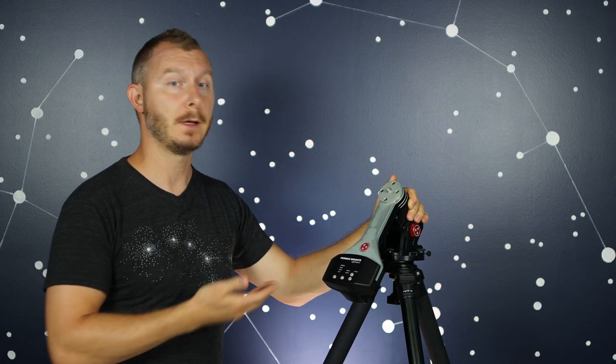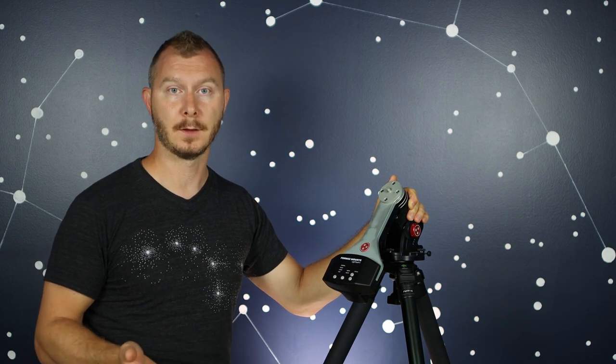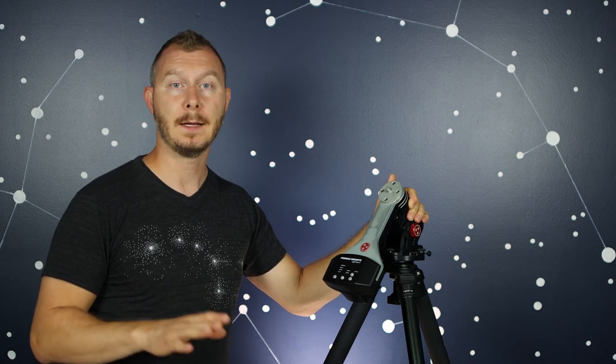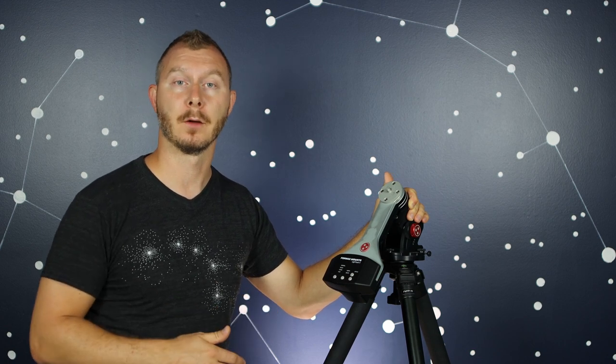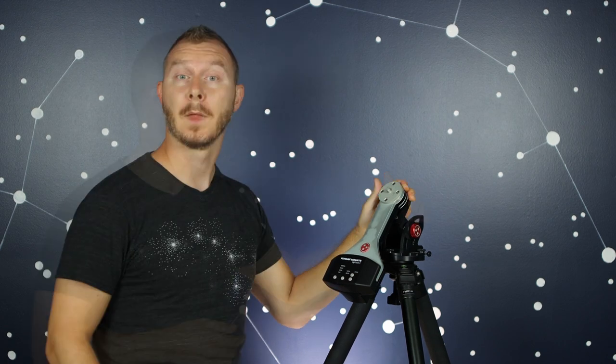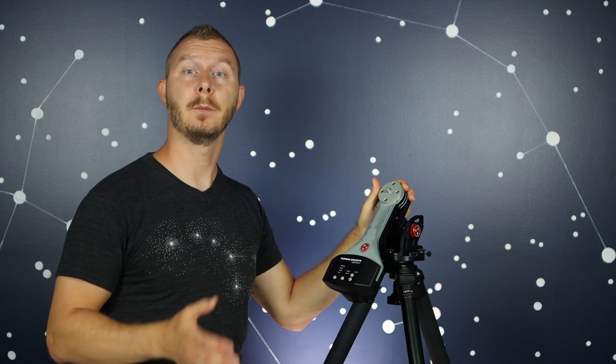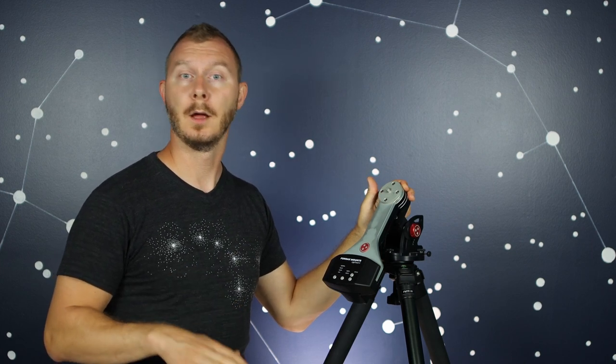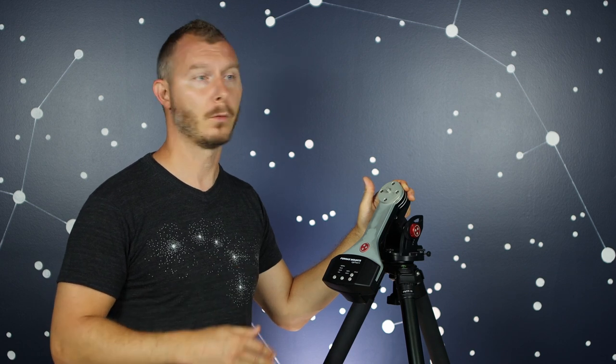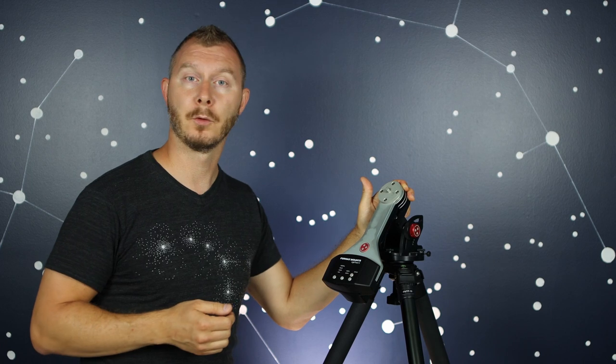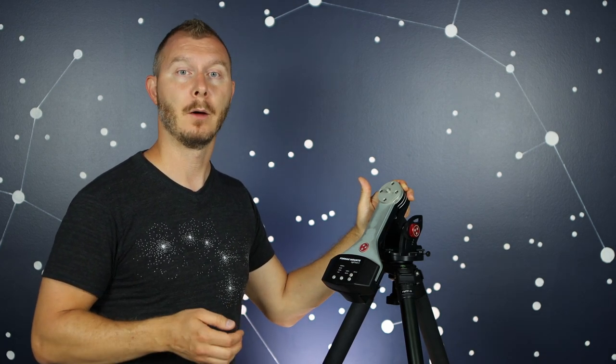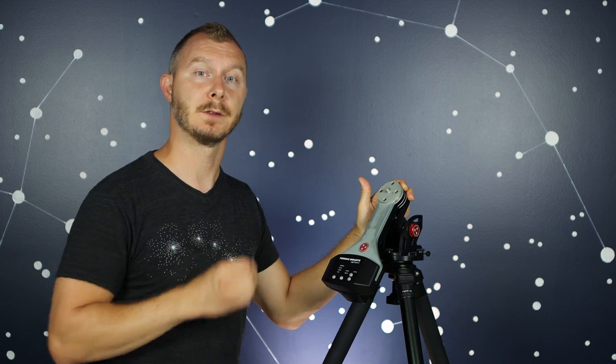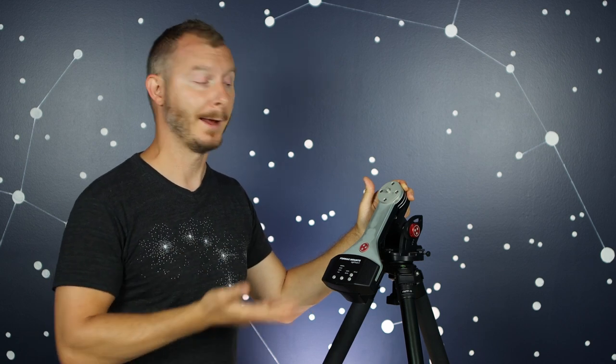We're going to use the Fornax Mounts Light Track 2 as a test article today, however many if not all of these steps will be equivalent for an equatorial mount as well. My approach to this tutorial is going to be as inclusive as possible. Whether your skill level is a beginner or maybe you've just never even seen an equatorial mount before and this is your first time learning how to polar align, I want to make sure that I give you all the steps necessary to understand why you're doing it and how to do it.